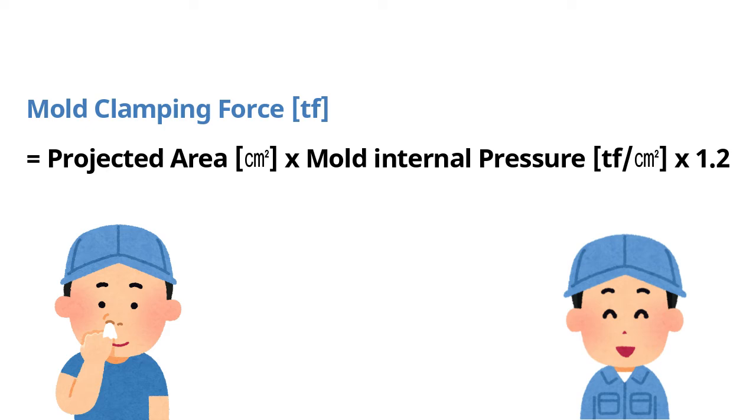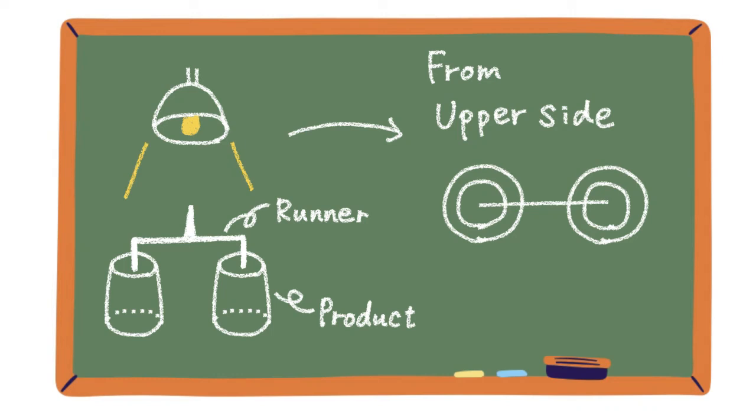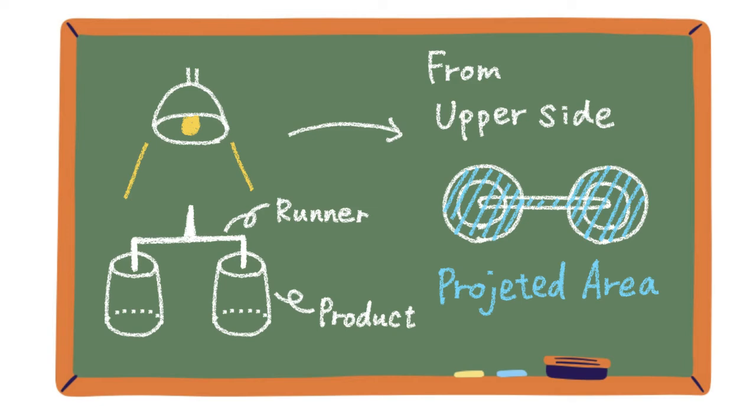First we need to check the projected area of product. Ichiro, please measure it. Okay, maybe you forgot I am senior. The projected area is the area when you view the product from above. Don't forget to include runner as well.